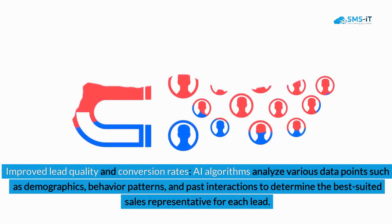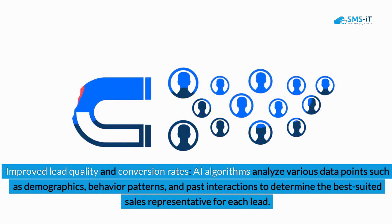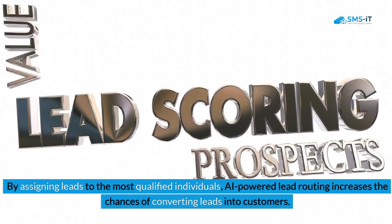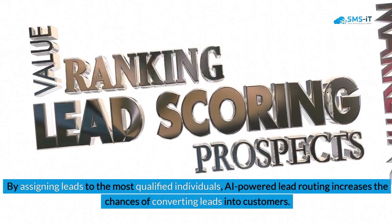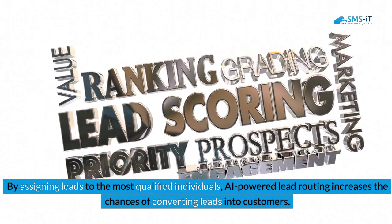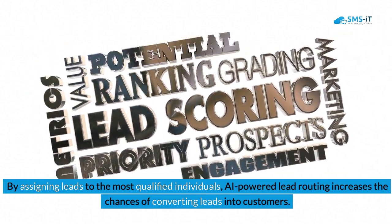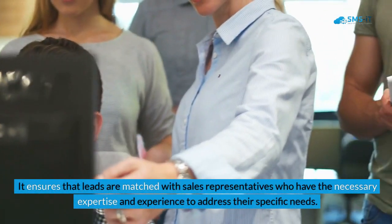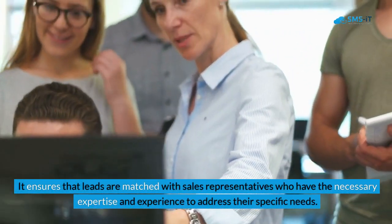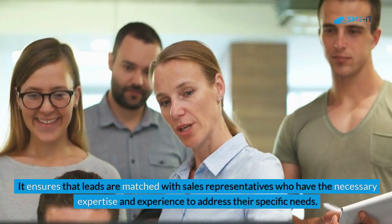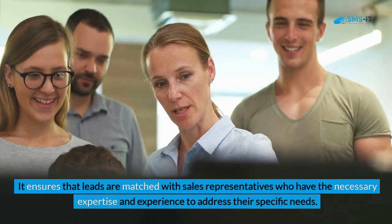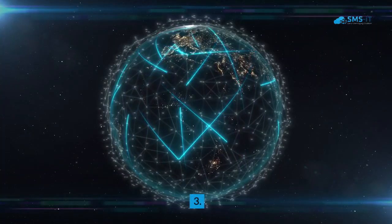Benefit 2 — Improved Lead Quality and Conversion Rates: AI algorithms analyze various data points such as demographics, behavior patterns, and past interactions to determine the best-suited sales representative for each lead. By assigning leads to the most qualified individuals, AI-powered lead routing increases the chances of converting leads into customers. It ensures that leads are matched with sales representatives who have the necessary expertise and experience to address their specific needs.